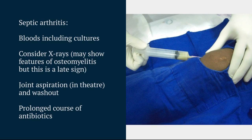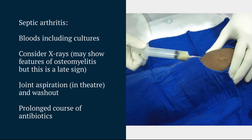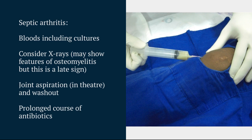In terms of investigations, if you're suspecting a septic arthritis, have a low threshold to involve the orthopedic team early. Bloods are going to be helpful, looking for your inflammatory markers and remembering to take blood cultures. Sometimes x-rays are requested, but their use is limited — they're not looking for septic arthritis, they're looking for other things. A lot of these children are going to require an aspiration of the joint and an extensive washout, followed by a prolonged course of antibiotics.